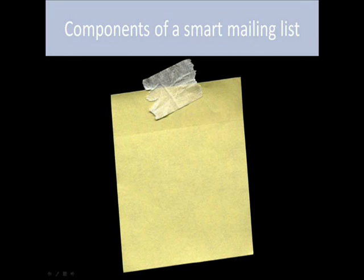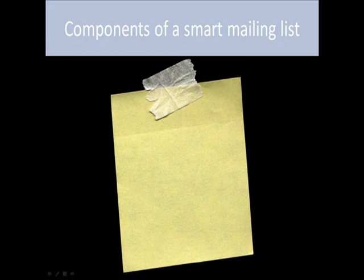Out with the parchment, in with the sticky notes. The smart mailing list is on a sticky note — I thought this one was pretty clever. It's on a sticky note and not a piece of parchment because a sticky note is newer, and because a sticky note is mobile. It's agile. It's adaptable. I can move a sticky note from one report to the other. That's the idea with the smart mailing list — it's going to change depending on its setting all of the time.